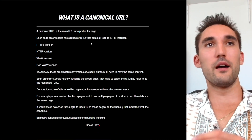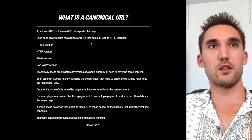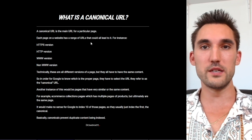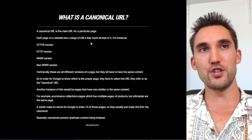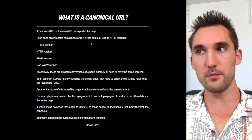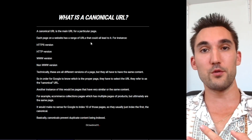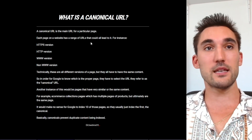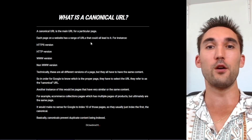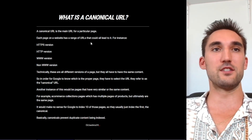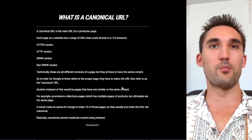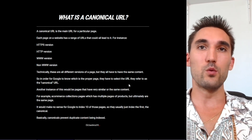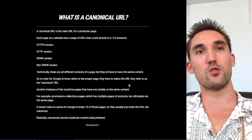Canonical URLs are the main URL for a particular page. Each page on a website has a range of different URLs that could all lead to it — the HTTP version, the HTTPS version, the www version, the non-www version, and the intermixing of all four together. Technically, all of these are different versions of a page but they all have exactly the same content. So in order for Google to know what the proper page is, they have to select one URL as the main one they want to display, which is what they refer to as the canonical URL.